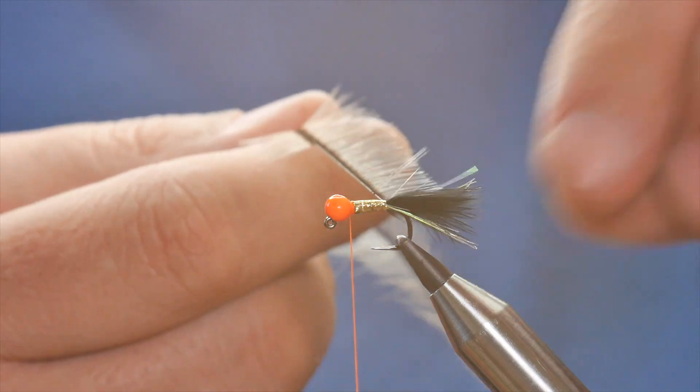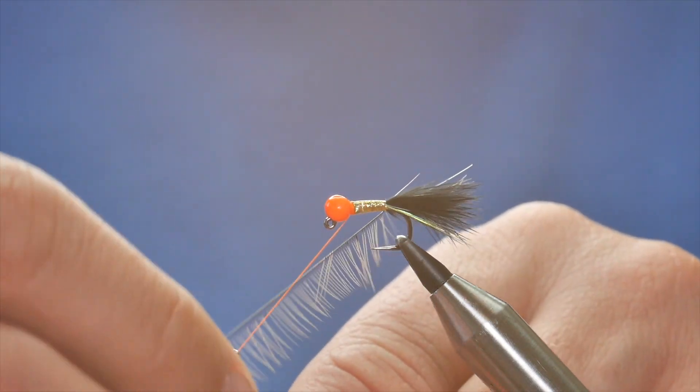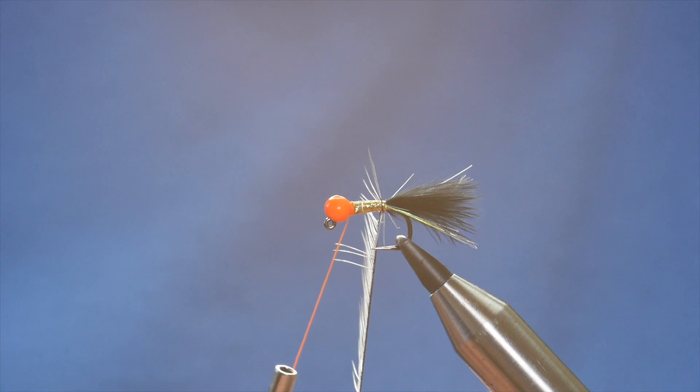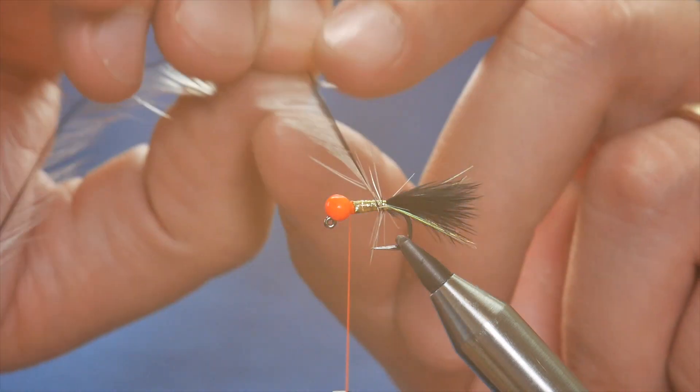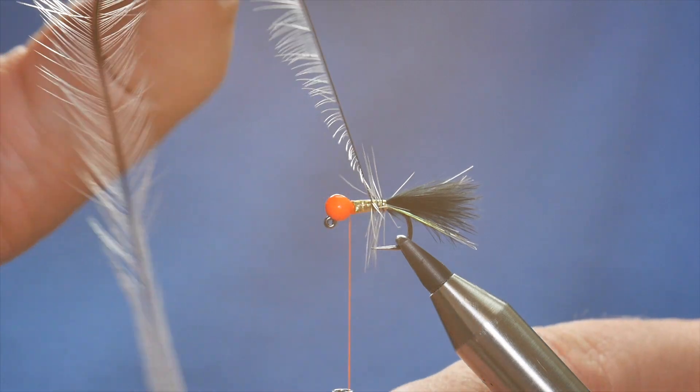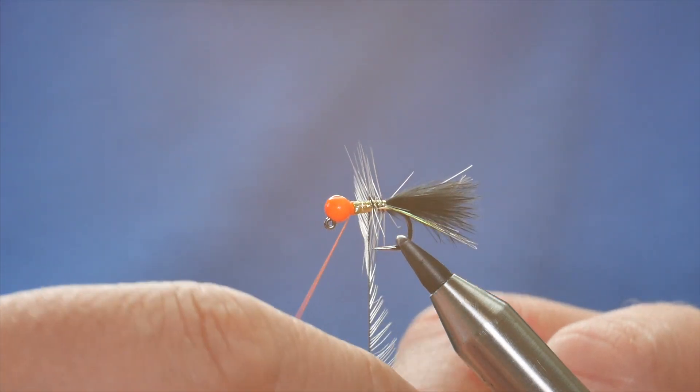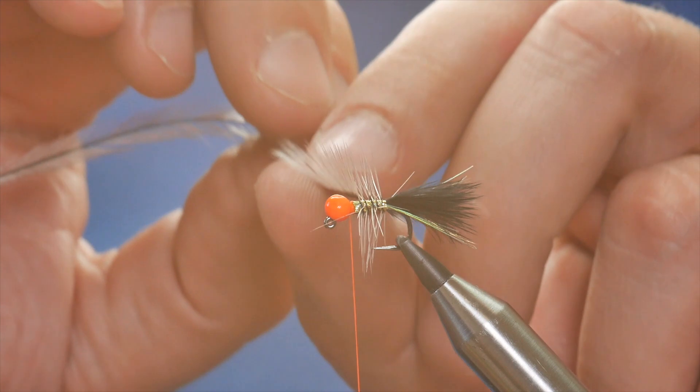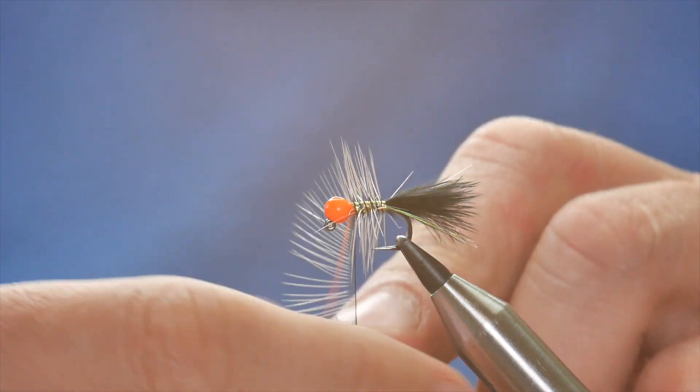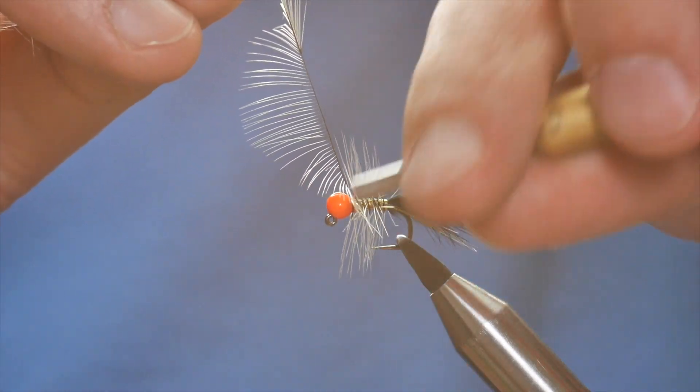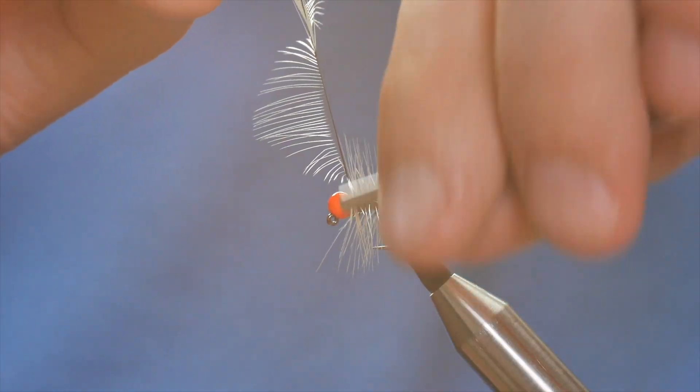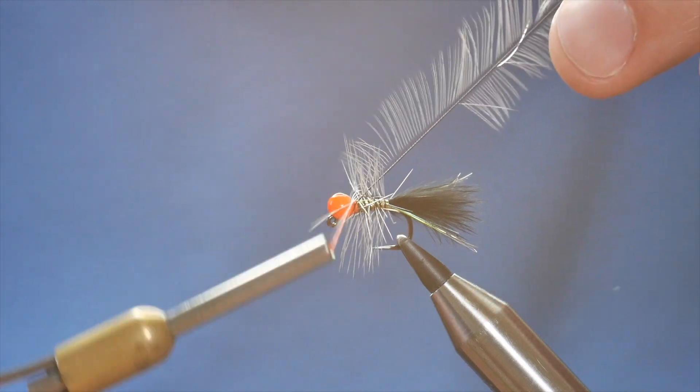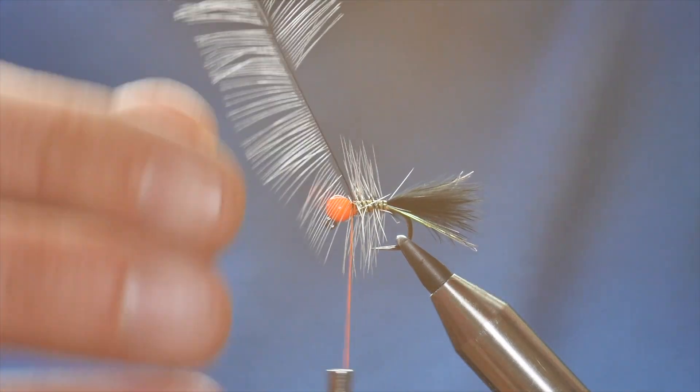Now, with my palmer, I want to try and bring it up. Nice and carefully, even turns, all the way up the fly to just behind the bead. Once I've done that, I can catch that in with a couple of turns, and then a turn or two in front of the bead.